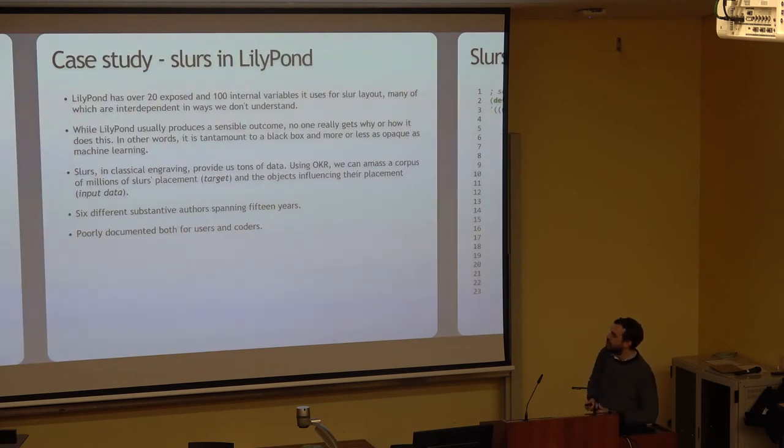Case study: slurs in LilyPond. LilyPond has over 20 exposed and 100 internal variables it uses for slurs and layout, many of which are interdependent in ways we don't understand. While LilyPond usually produces a sensible outcome, no one really gets why or how it does this. LilyPond is too complicated and too baroque to understand in every single case why it works. You can look through the logs and kind of figure it out, but by naked eye, at least I don't know anybody that knows this. In other words, it's tantamount to a black box, and more or less as opaque as machine learning, which is also a black box. And slurs, in classical engraving, provide tons of data.